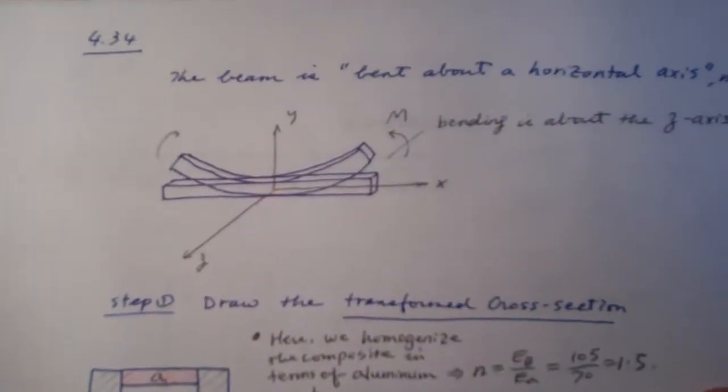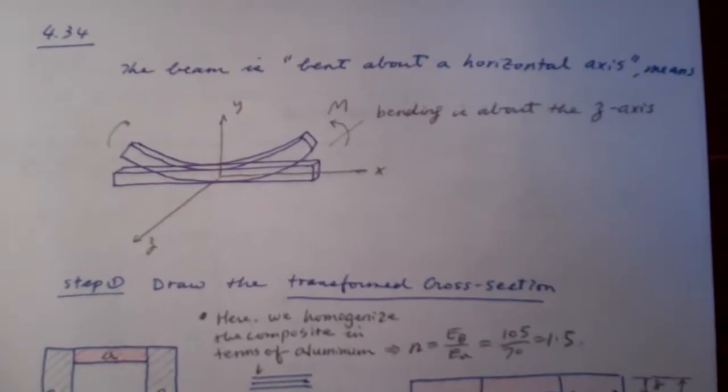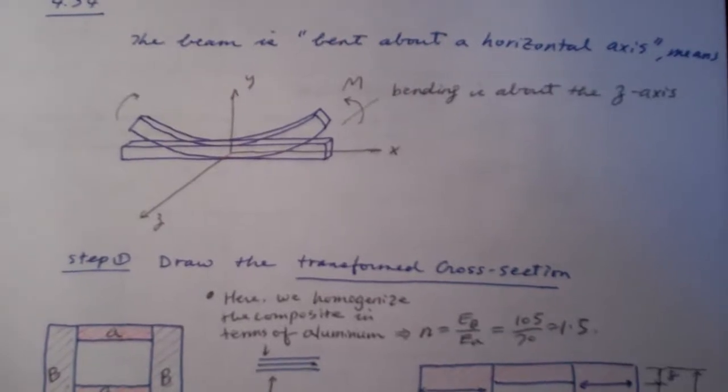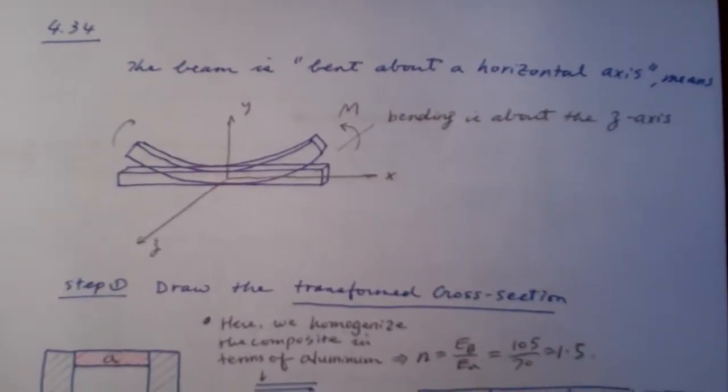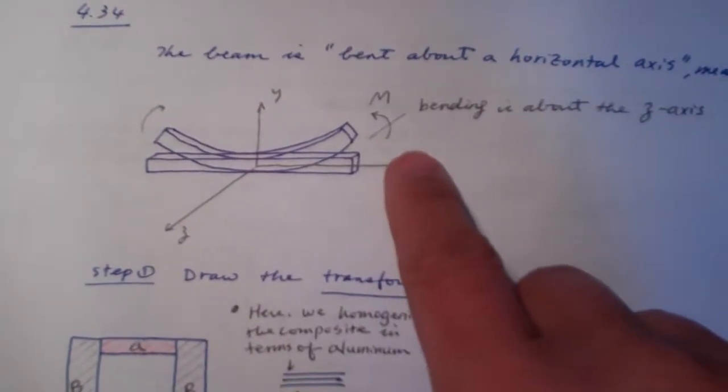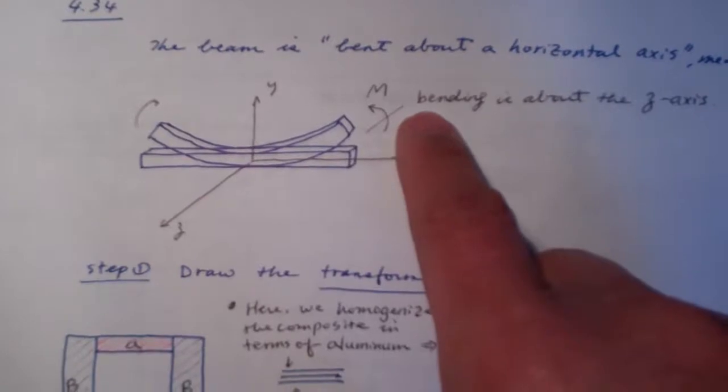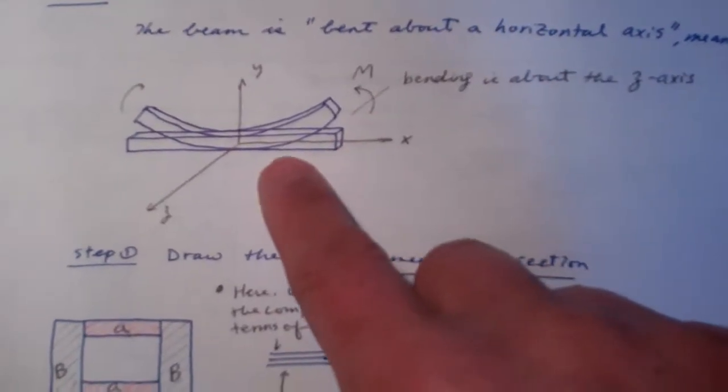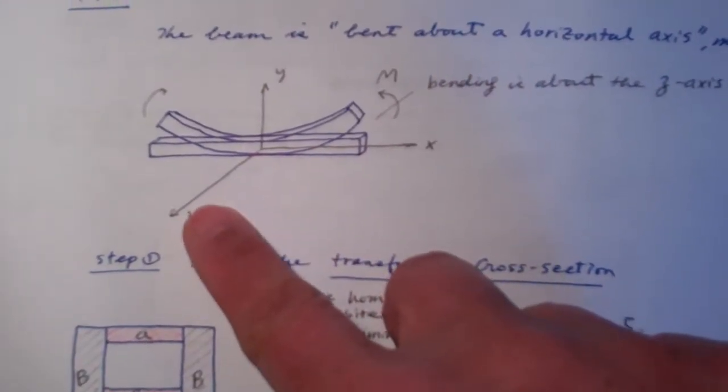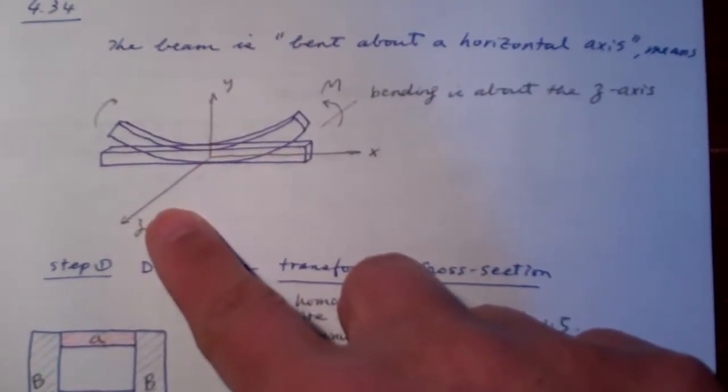And here is the process I derived earlier, and I'll show you the step in detail. The first one saying the beam is bent about the horizontal axis is saying the beam is bent about the z-axis, which is in the horizontal plane, and that is the meaning of this problem.